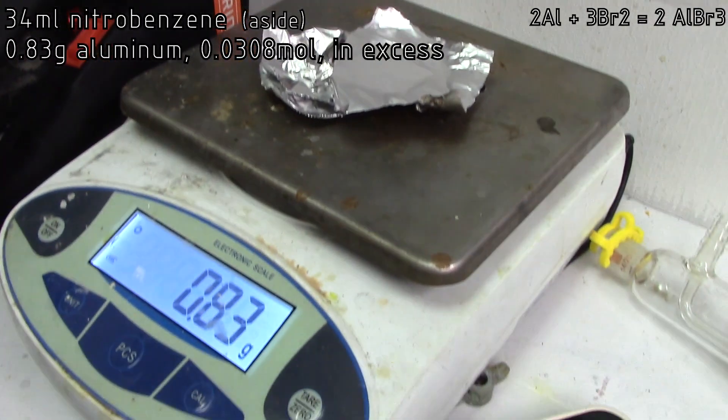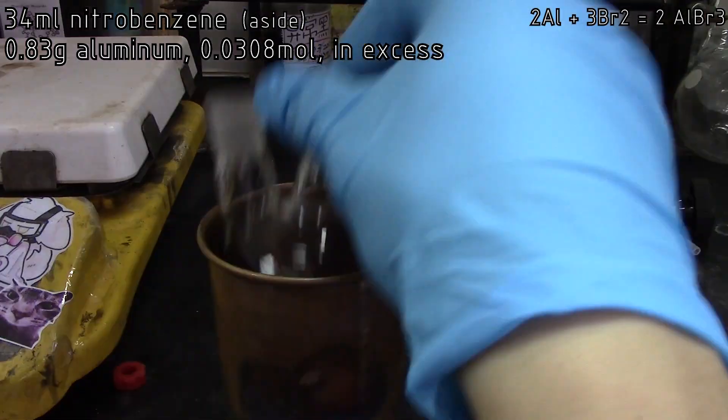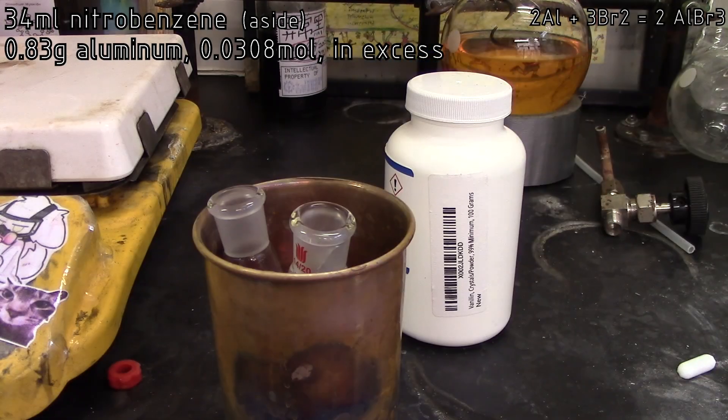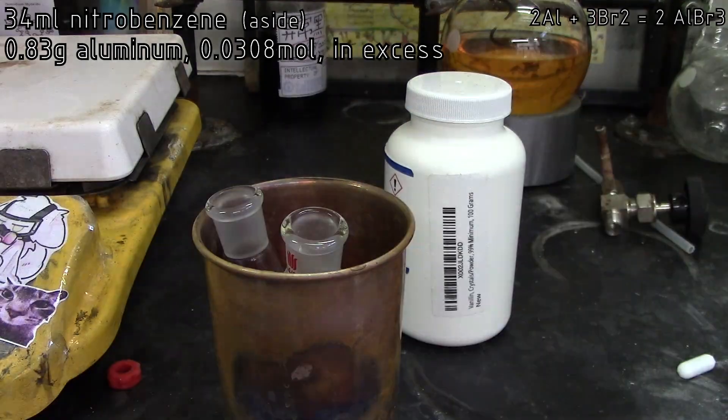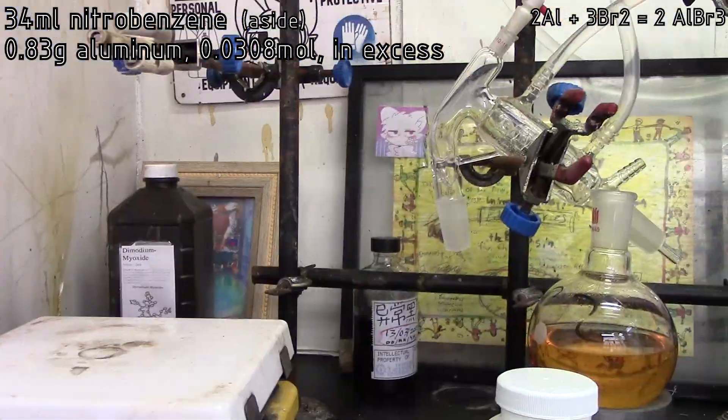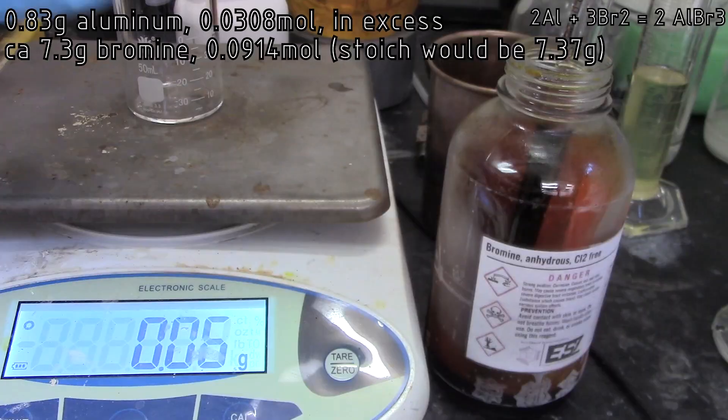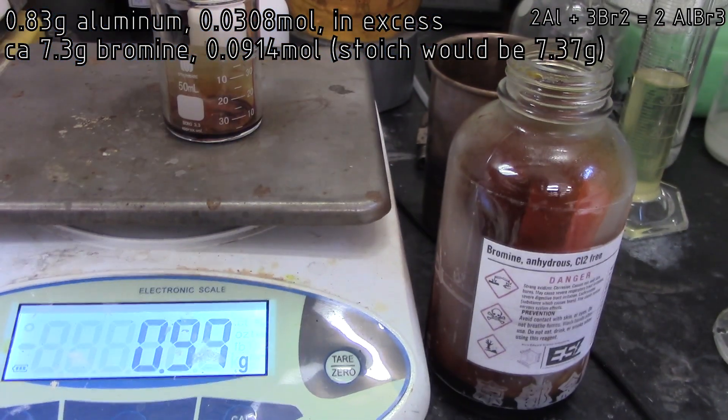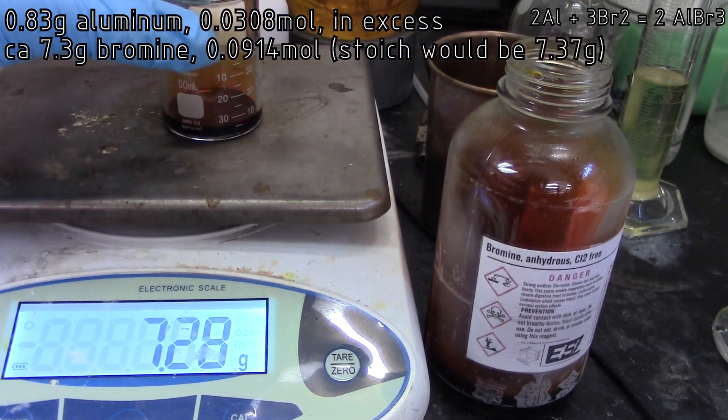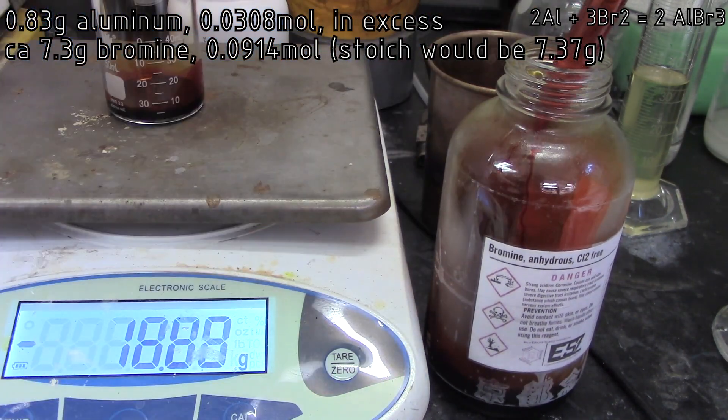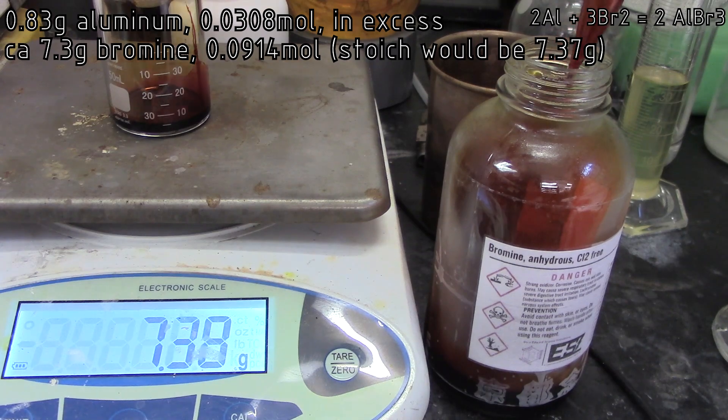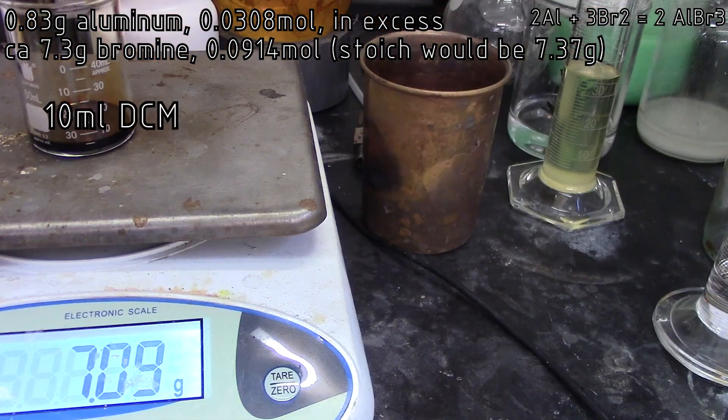So yeah, we're going to set this aside. We have 34 milliliters and we're going to scale the procedure accordingly, or at least approximately anyways. So we need anhydrous aluminum bromide, which I don't have, so I'll prepare that from aluminum and bromine. So we have a slight excess of aluminum, 0.83 grams of foil, which I ripped up and placed into a 3 milliliter tube in a flask. And we'll add 7.3 grams of bromine to it, which is a slight deficit.